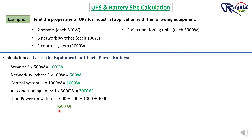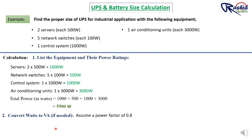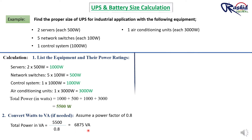For UPS calculation we require power in VA, not in Watts, so we convert. Assuming a power factor of 0.8, total power in VA equals 5500 divided by 0.8, which gives us 6875 VA.